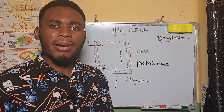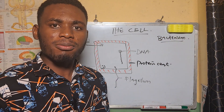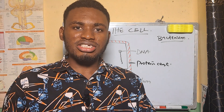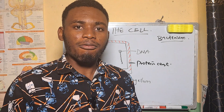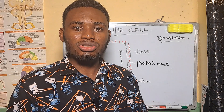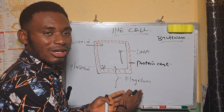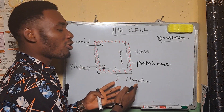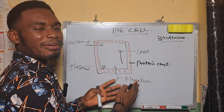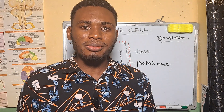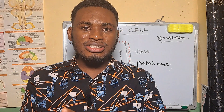Aside from the bacterium, which forms the major example of the prokaryotic cell, all other eukaryotic cells belong to the plant cell or the animal cell. So aside the prokaryotic cell, every other cell that you can get in a living organism belongs to two major classes: the plant cell and the animal cell.